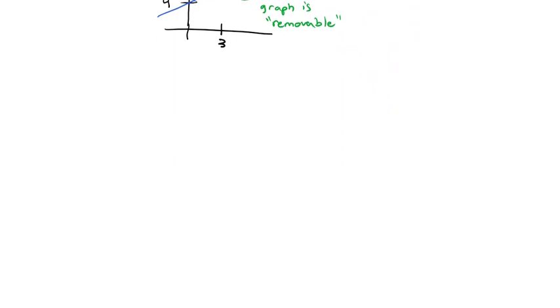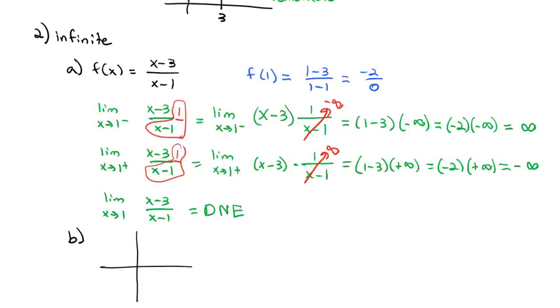The second type of discontinuity that we're going to look at is called an infinite discontinuity. And the example we're going to use here is f of x is equal to x minus 3 over x plus 1. We would end up with a vertical asymptote at 1.